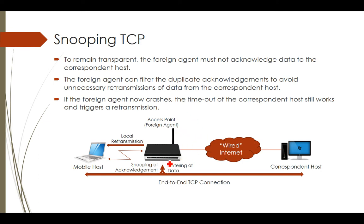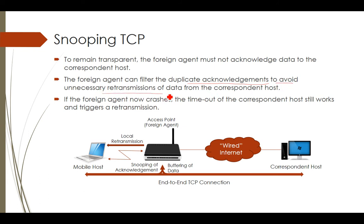To remain transparent, the correspondent node should not know about all internal communications. Therefore, the foreign agent must not acknowledge data to the correspondent host — it will not send any acknowledgement to the correspondent host. Otherwise, during retransmission, if it sends an acknowledgement, the correspondent host might send the packet again, causing problems. The foreign agent can filter duplicate acknowledgements to avoid unnecessary retransmission of data from the correspondent host.